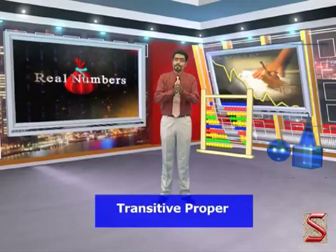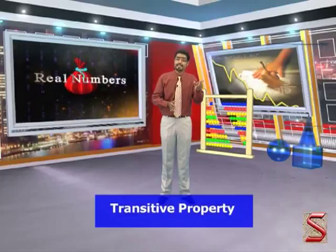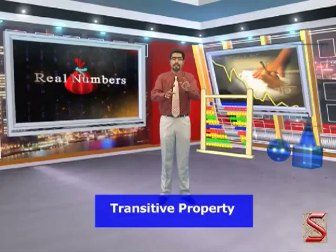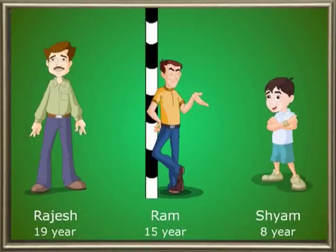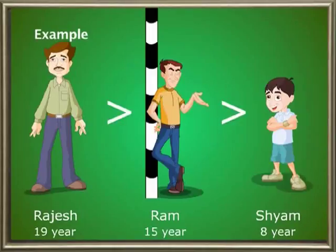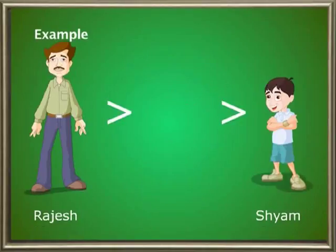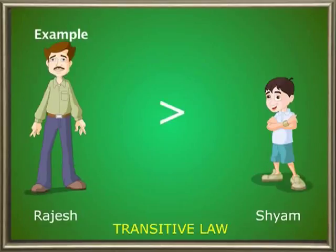Let us look at one more interesting property of rational numbers: the transitive property. In case of rational numbers, if x is greater than y and y is greater than z, then automatically x is greater than z — this is known as the transitive property. For example, Ram, Sham and Rajesh are brothers. Sham is younger than Ram and Ram is younger than Rajesh, so obviously Sham is younger than his brother Rajesh. This is the transitive law.